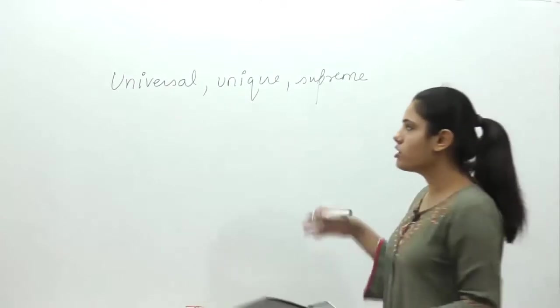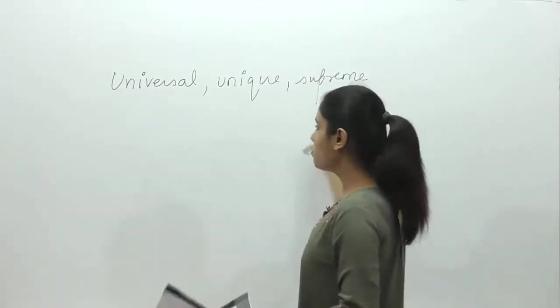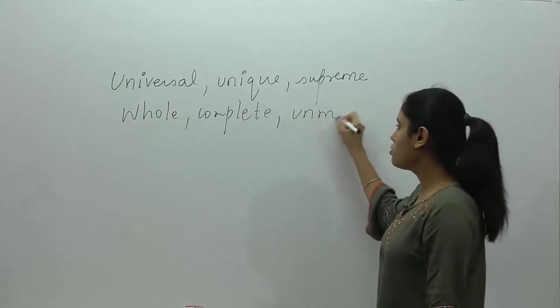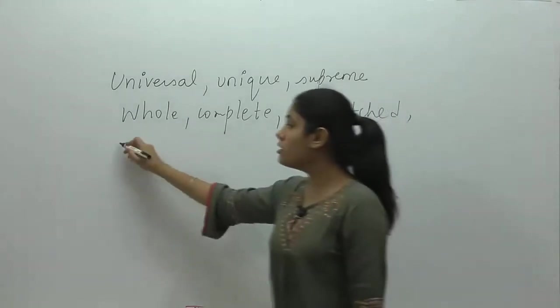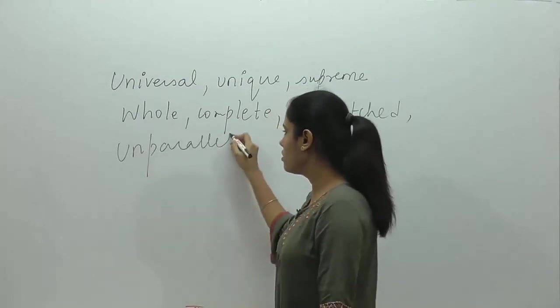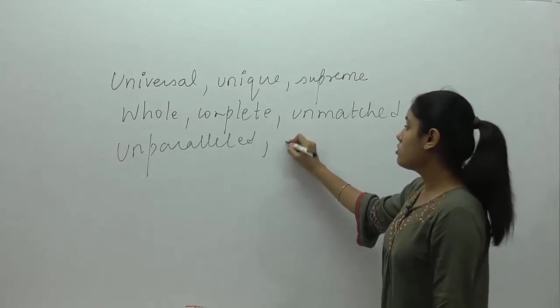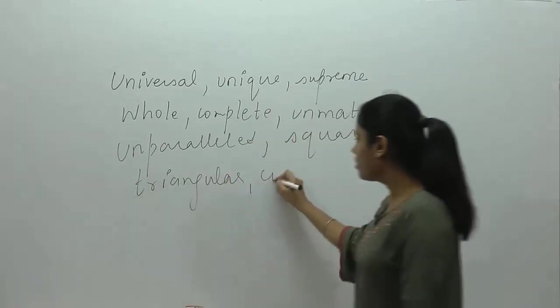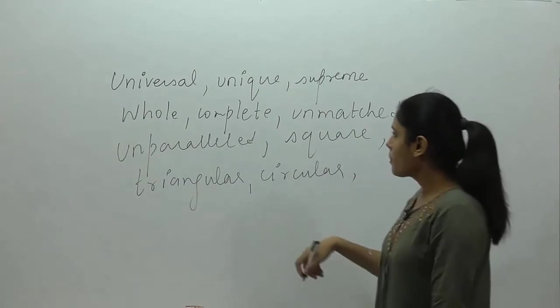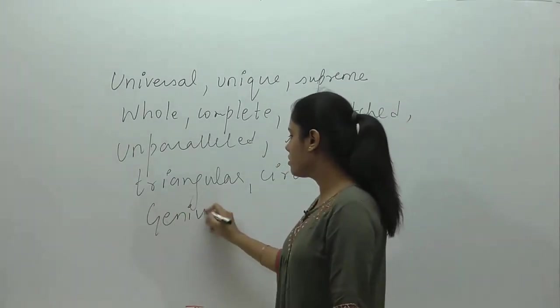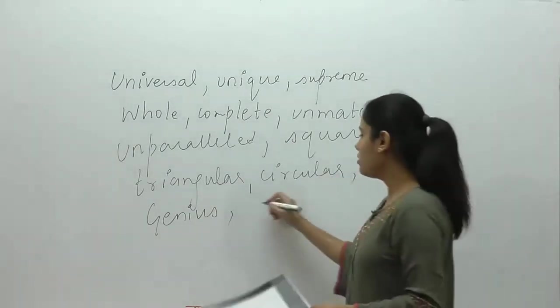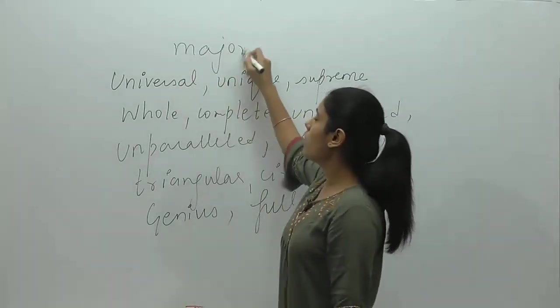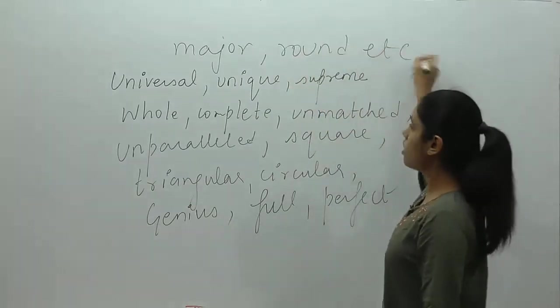So you won't write more supreme or you won't write most unique or most universal, because these words they are superlative by nature. So the other words that are superlative by nature, which won't make use of more or most, will be: universal, unique, supreme, whole, complete, unmatched, unparalleled, square, triangular, circular, genius, full, perfect, major, round, etc.